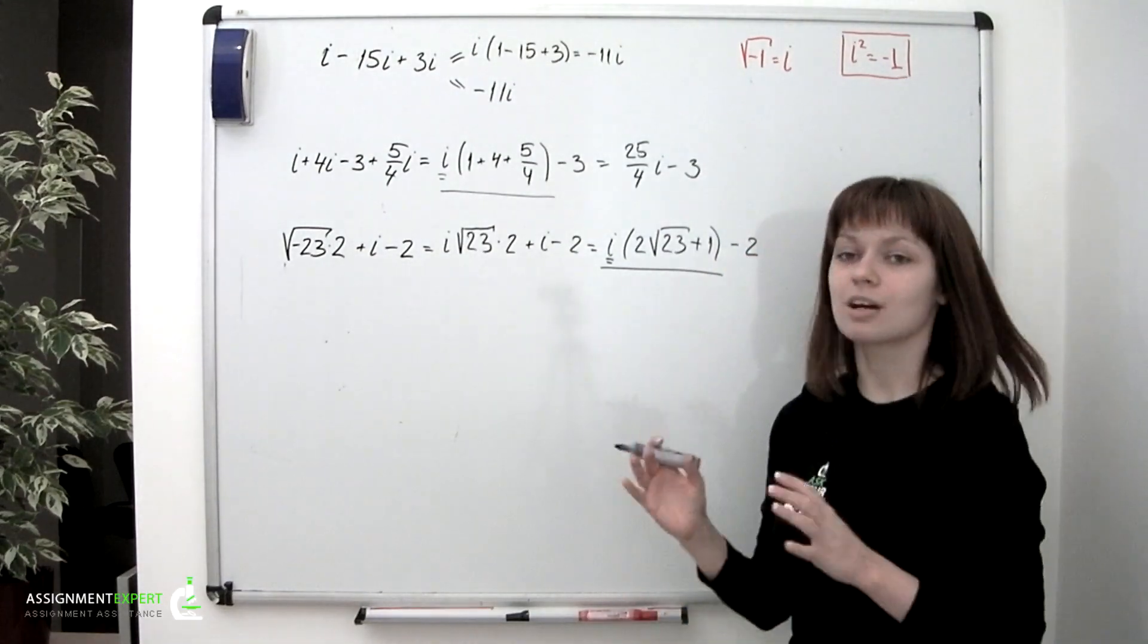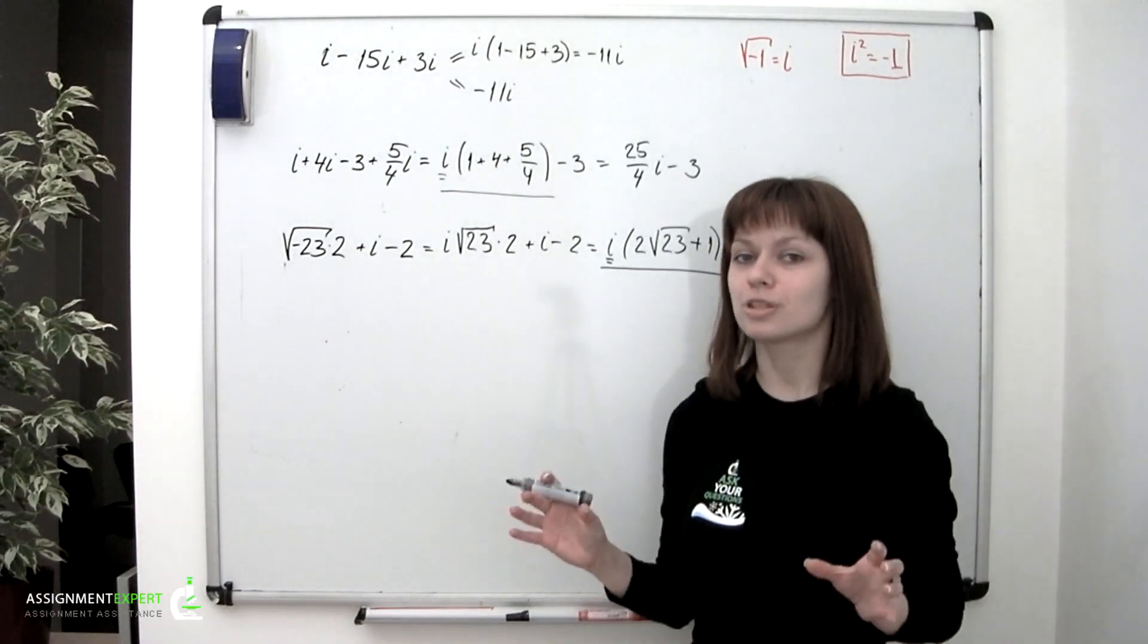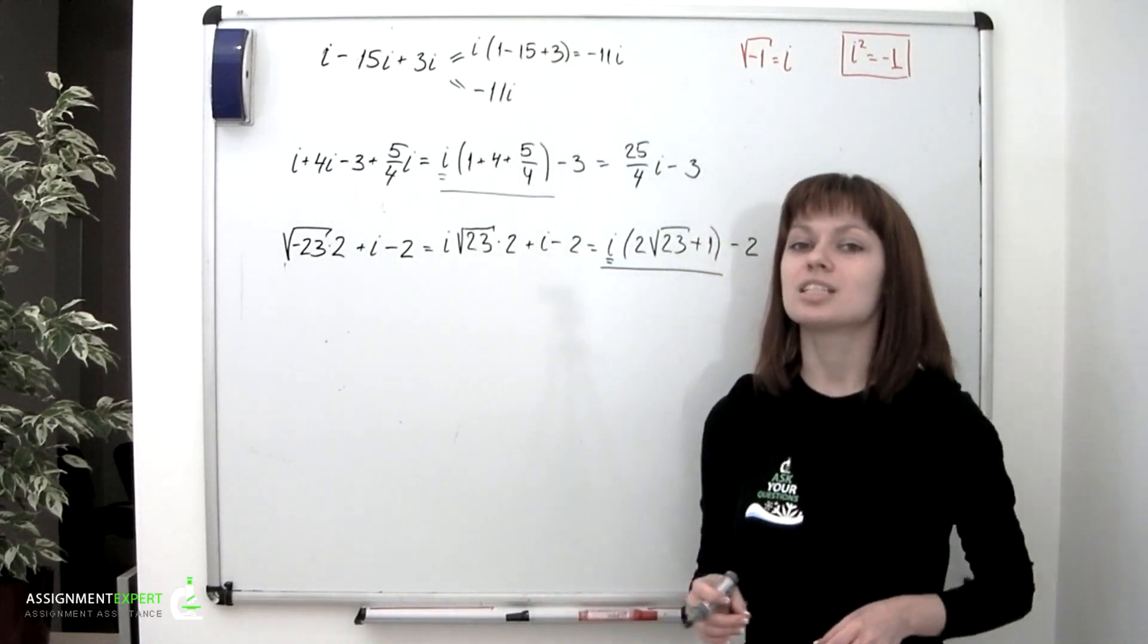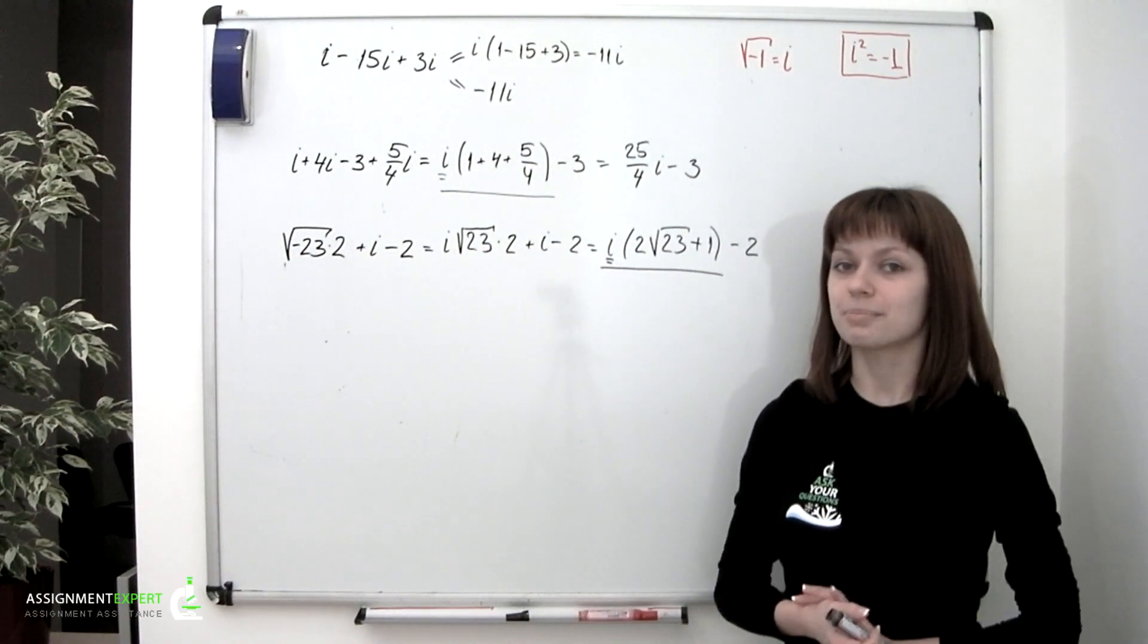So one more time. A complex number is a compound of two numbers, real and imaginary. Imaginary numbers are recognized by an i mark used to identify them.